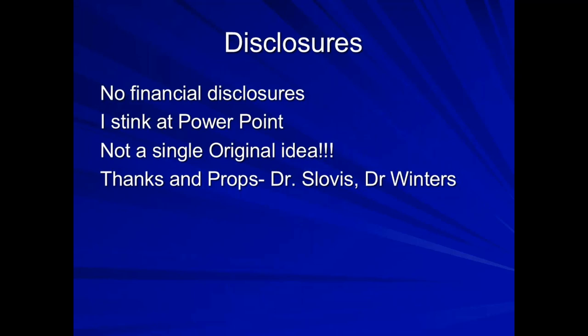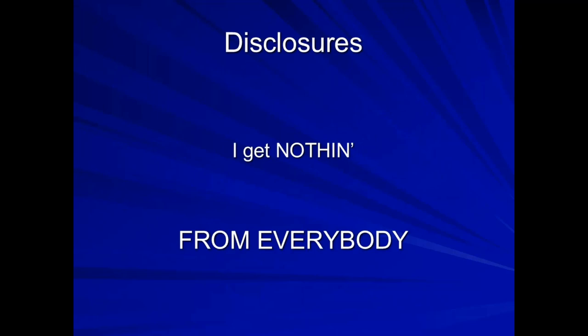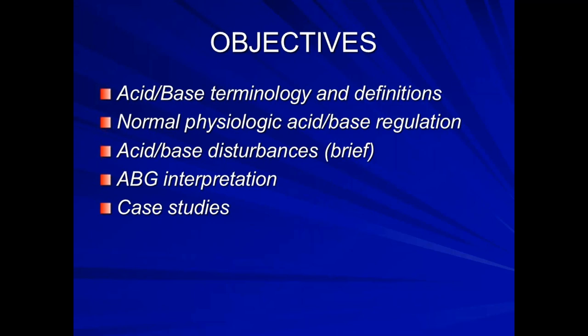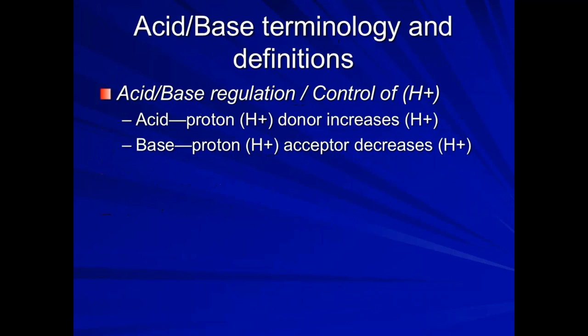This was supposed to be a two-part thing, but we're time-pressed so I'm going to squeeze it into one. Spoiler alert: we're not going to go over the treatment of ethylene glycol poisoning, and we're not going over the pathophysiology of alcoholic ketoacidosis — that's a whole other topic. We're going to do this systematically using acid-base terminology and definitions, go over normal, go through the acid-base disturbances — there are only four of them — then systematically bang out an ABG, and then do some case studies.